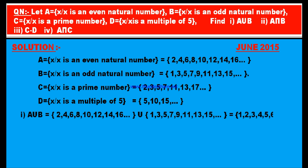B = {1, 3, 5, 7, 9, 11, 13, 15, ...}. Since it is union, you have to list out all elements present in the first set as well as the second set. If you write them in order you get 1, 2, 3, 4, 5, 6, and so on — the set of natural numbers.